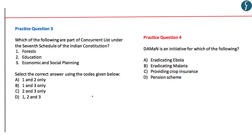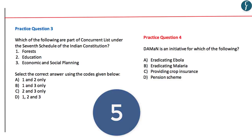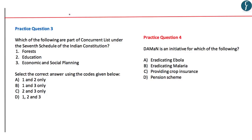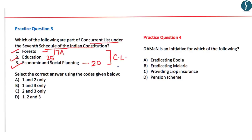After our discussion, these form your practice questions. Question 3: Which of the following are part of the concurrent list under the 7th schedule of the Indian constitution? Options are forest, education and economic and social planning. All three are part of the concurrent list — forest is under entry 17A, education under entry 25, and economic and social planning under entry 20. So 1, 2 and 3 is the correct answer. The next question asks about DAMAN — this is an initiative to eradicate malaria, so B is the correct answer. These types of questions can also be asked in your upcoming prelims examination.